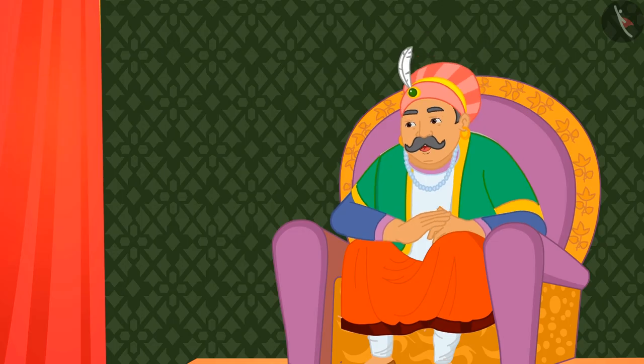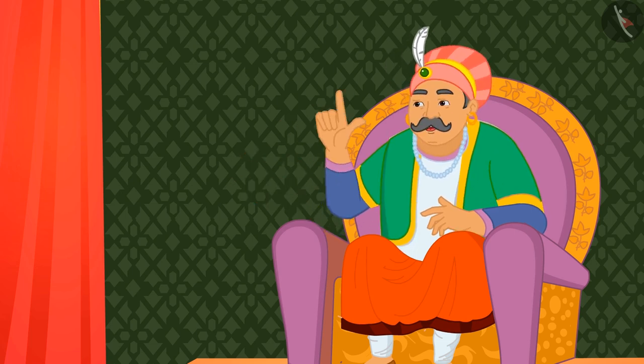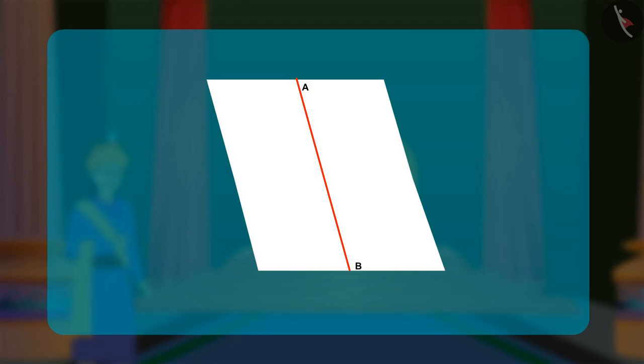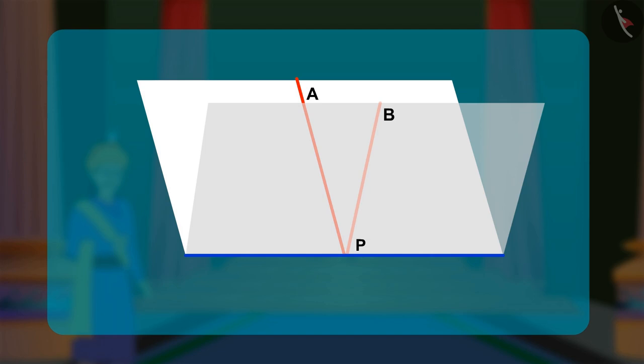Akbar was impressed but wanted to test Birbal further and asked, how will you form a line perpendicular to a point on a given line? Birbal, using the same paper, folds the paper so that a segment of the given line AB is folded over onto itself to ensure that the crease passes through the given point P, creating a perpendicular line at a given point on the line.